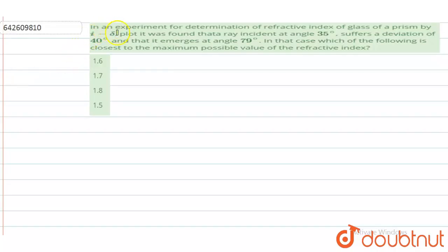Hello, the question is: in an experiment for determination of refractive index of glass by plotting angle of incidence versus deviation, it was found that a ray incident at an angle of 35 degrees suffers a deviation of 40 degrees and emerges at an angle of 79 degrees.